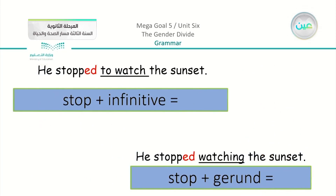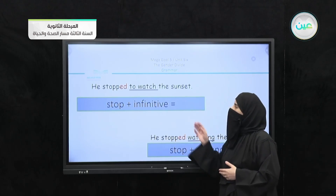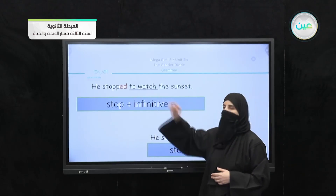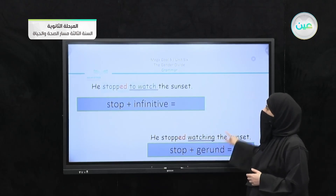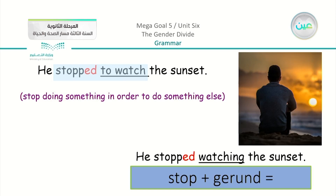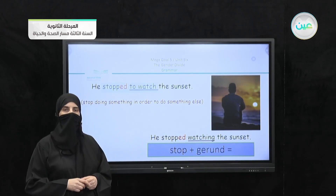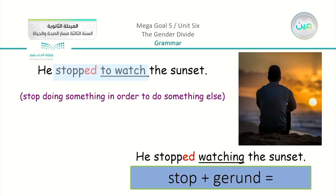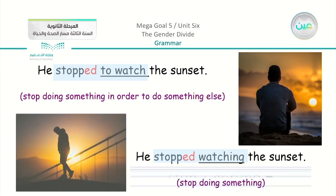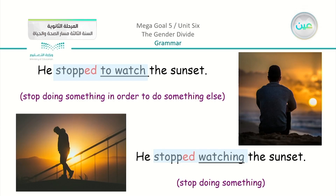For 'stop': 'He stopped to watch the sunset' — infinitive — means he stopped doing something in order to do something else, for example he stopped walking in order to watch the sunset. 'He stopped watching the sunset' — gerund — means he ended the action of watching. The same verb 'stop' has a very different meaning depending on whether you use the infinitive or the gerund.